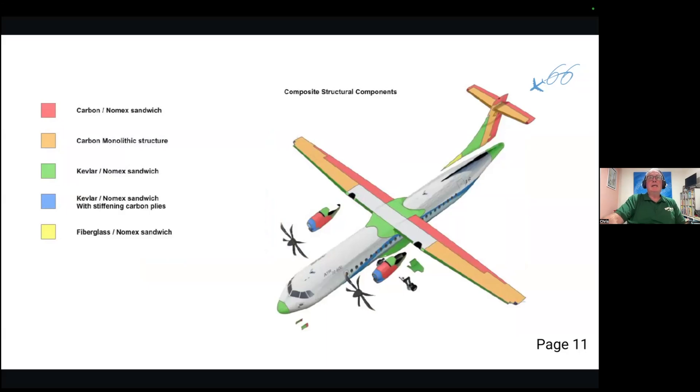There are several non-metallic parts on this aircraft, which as always provide weight reduction and strength. Below are the composite structural components. So we have bits, the pinky bits are carbon-nomex sandwich. The orange bits are carbon-monolithic structure, so it's all one part. The green bits are Kevlar or Kevlar-nomex sandwich.